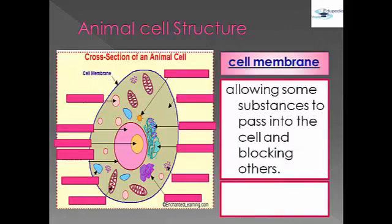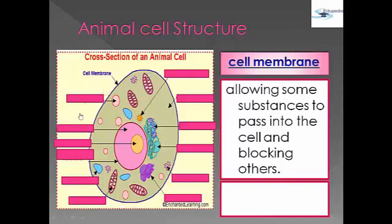The cell membrane allows some substances to pass into the cell and blocks others. If a substance can help the cell, it is allowed in; if not, it is rejected. In other words, this can be described by the fluid mosaic model.